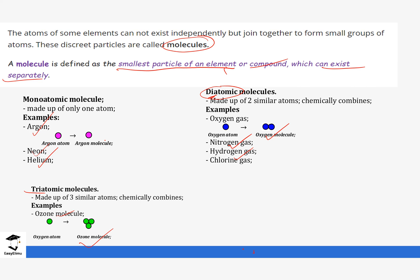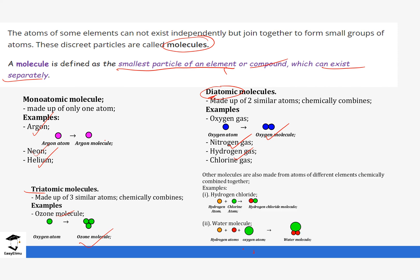Other molecules can also be made up of atoms that are not similar. For example, hydrogen chloride is made up of a hydrogen atom and a chlorine atom — it forms a molecule called hydrogen chloride. Water is made up of two hydrogen atoms and one oxygen atom, forming a water molecule. These molecules made up of different atoms can also be referred to as compounds.